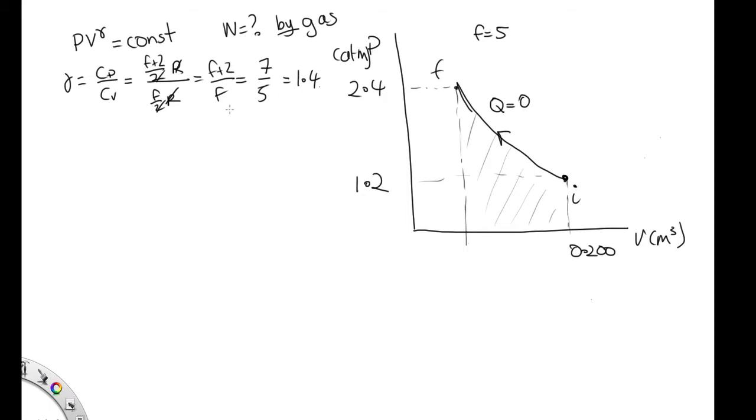So we can use this now to find the final volume, as we've got the initial pressure and volume and the final pressure. So we've got P initial, V initial to the 1.4 is equal to P final, V final to the 1.4. We can keep our pressures in atmospheres as long as we do it for both of them. So this is 1.2 times 0.200 to the 1.4 is equal to 2.4 times V final to the 1.4.